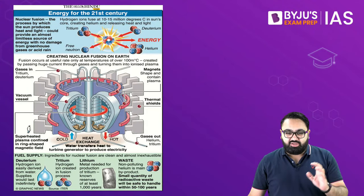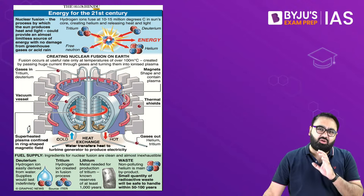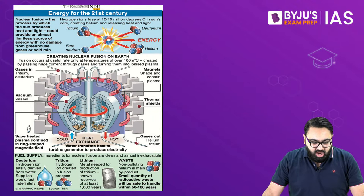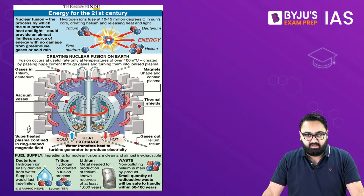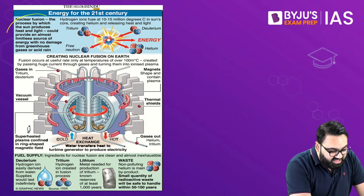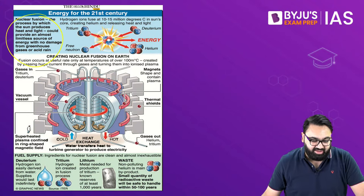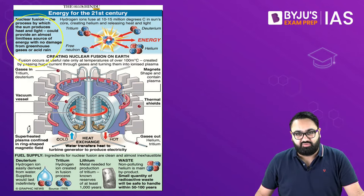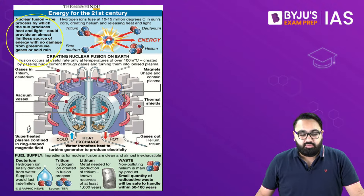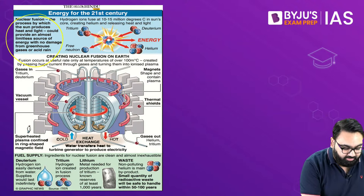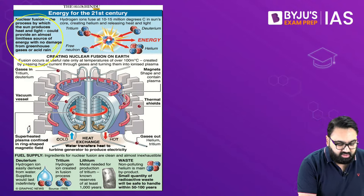If you look at this infographic, it gives a lot of very important and interesting information about nuclear fusion. As mentioned, this is a process by which the sun generates its heat and light, and it could be an almost limitless source of energy. The key difference being that in this case there would be no damage to the environment.